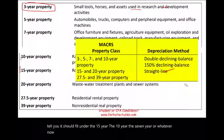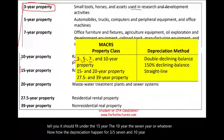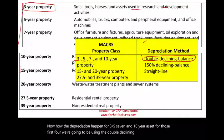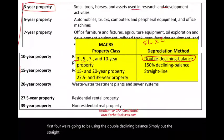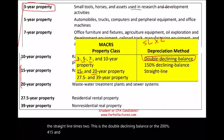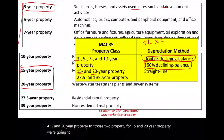Here's how the depreciation works. For 3-, 5-, 7-, and 10-year assets, we use the double declining balance — simply put, the straight line times two, also called the 200% declining balance. For 15- and 20-year property, we use the 150% declining balance, so they use a different rate.